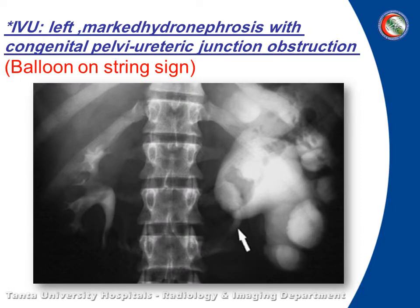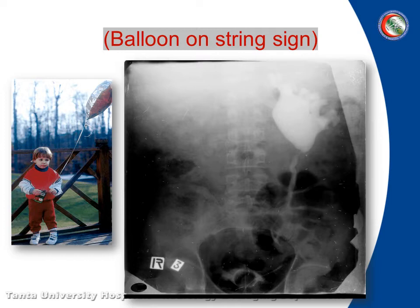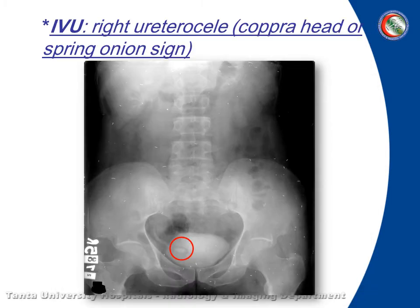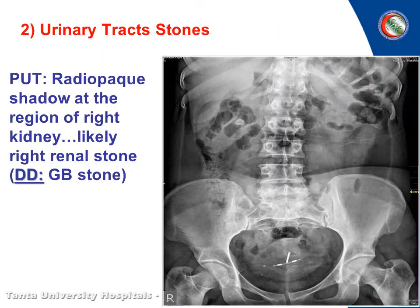Here is pelvi-ureteric junction obstruction — dilatation of the calyces and pelvis with stricture of the ureter. Here is the gold balloon ring sign, like this one. And here is the ectopic ureterocele — right ureterocele, copperhead or spring onion sign.